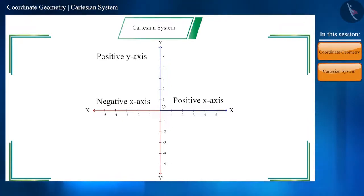These x and y axes divide the plane into four parts. These parts are called quadrants. These are named in the anti-clockwise direction as follows: